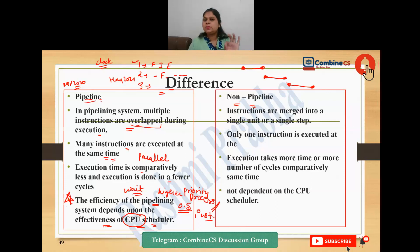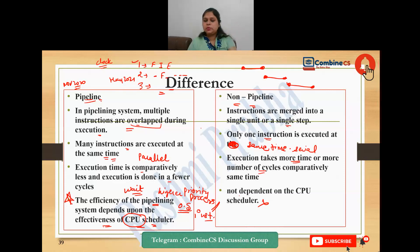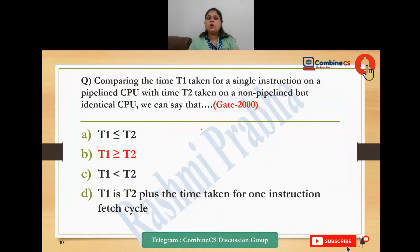In non-pipeline, the reverse happens - you merge in a single step. Only one instruction is executed at the same time. This is the difference between pipeline and non-pipeline. Now, answer this question: comparing time T1 taken for a single instruction, the performance of pipeline processes suffers from what?